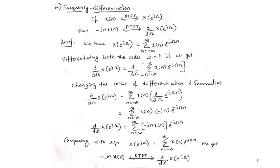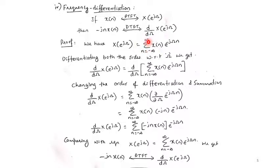Next, we discuss frequency differentiation. Frequency differentiation means there is a differentiation term in the frequency domain. It is also called multiplication by a ramp signal. The statement is: if x(n) has DTFT X(e^{j\omega}), then the DTFT of (−j·n·x(n)) is d/dω of X(e^{j\omega}). To prove this, we start with X(e^{j\omega}) = summation over n from minus infinity to plus infinity of x(n)·e^{-j\omega n}.